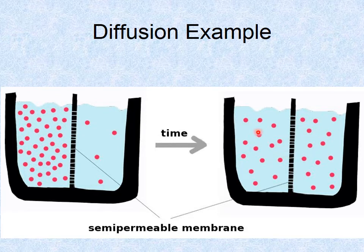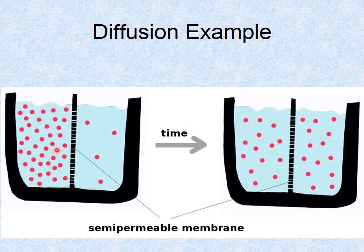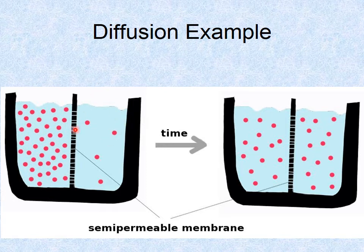Particles are flowing back and forth constantly, so once equilibrium is reached it is not completely motionless, but the equilibrium will somewhat stay. Sugar is not the only particle here — we also have water. In this example, sugar is at high concentration on the left side, but water is at high concentration on the right side, because all the sugar is taking the place of where water could be. So not only will sugar move from high to low concentration, but water will also move from its high concentration to its low concentration.